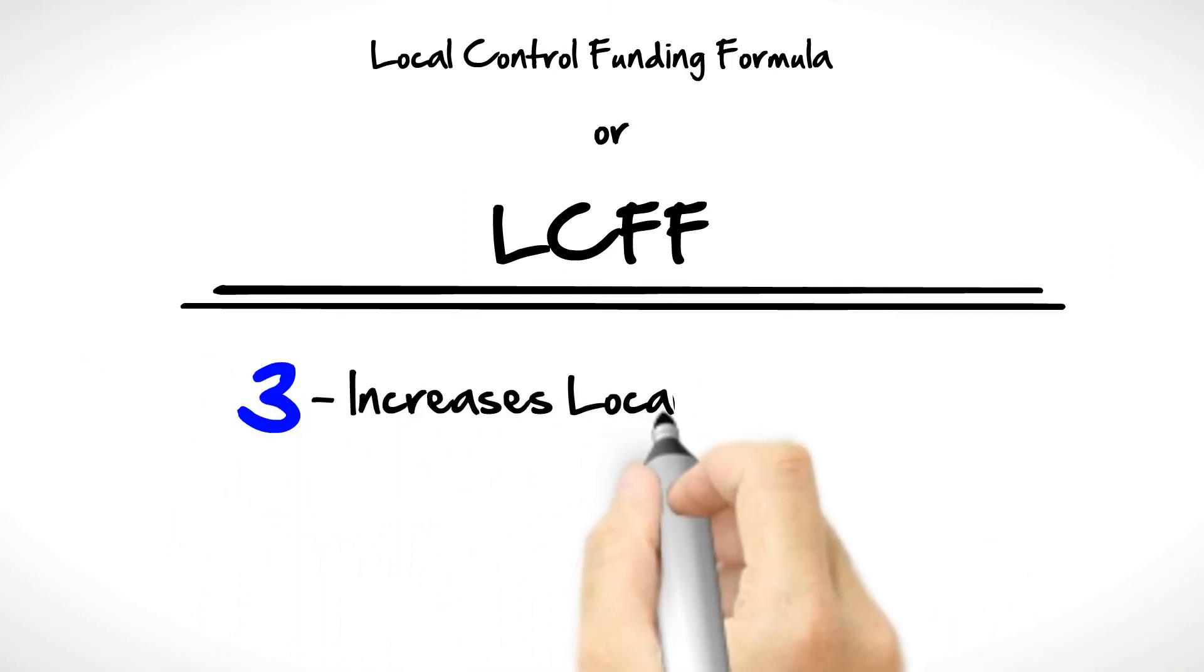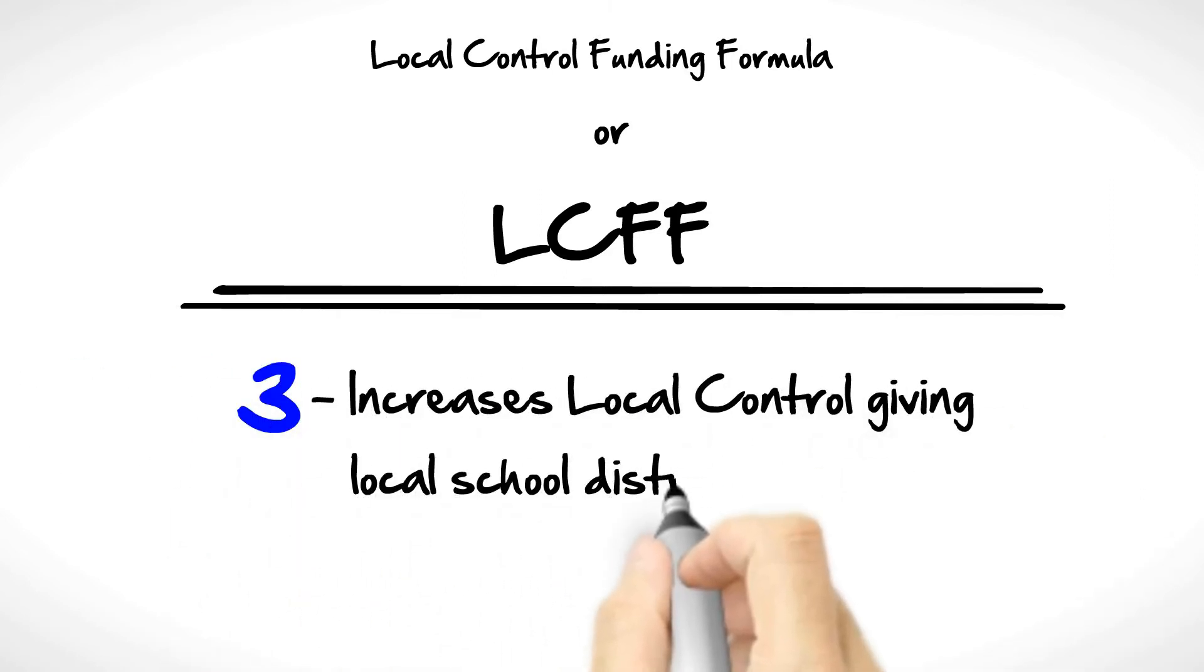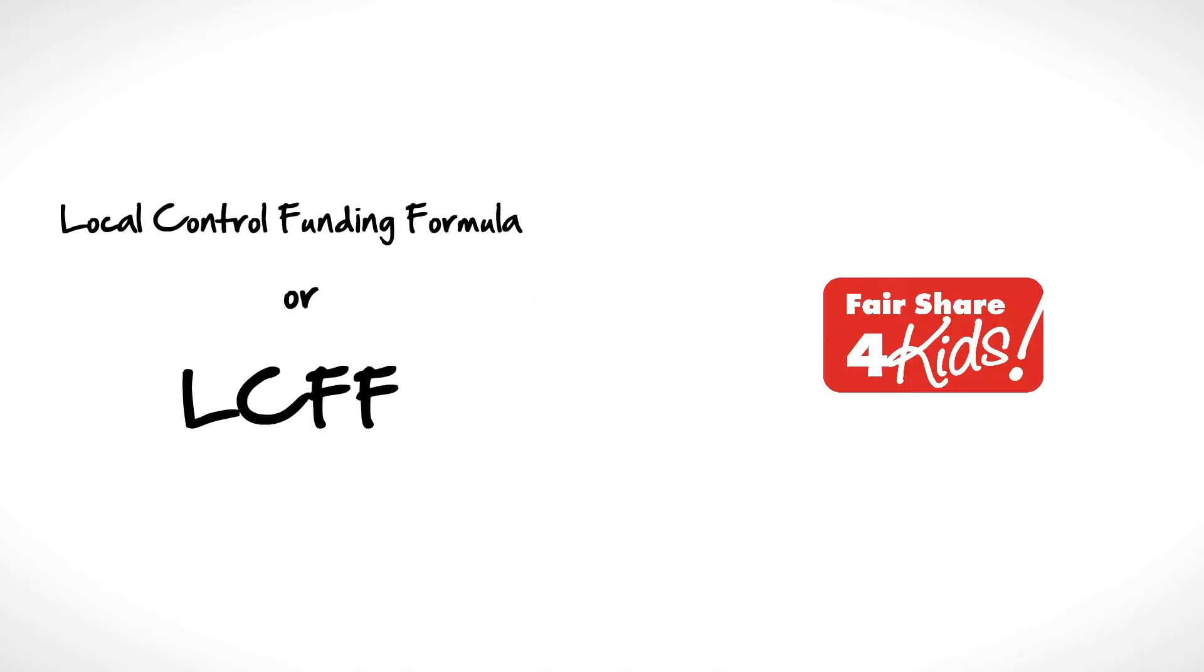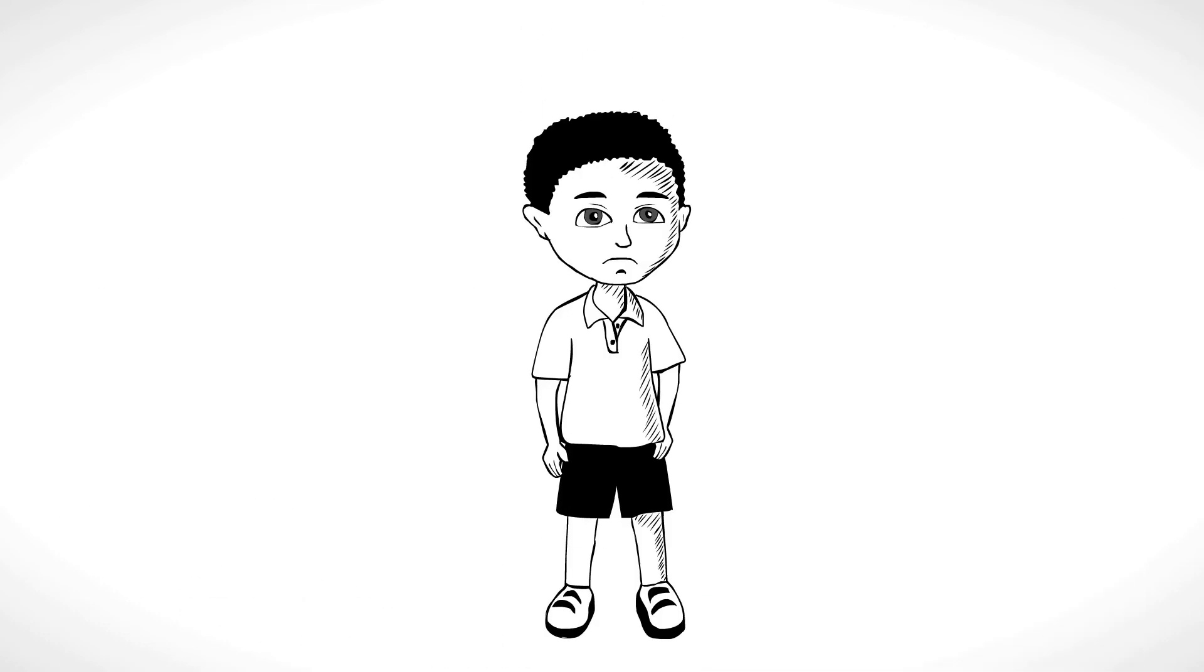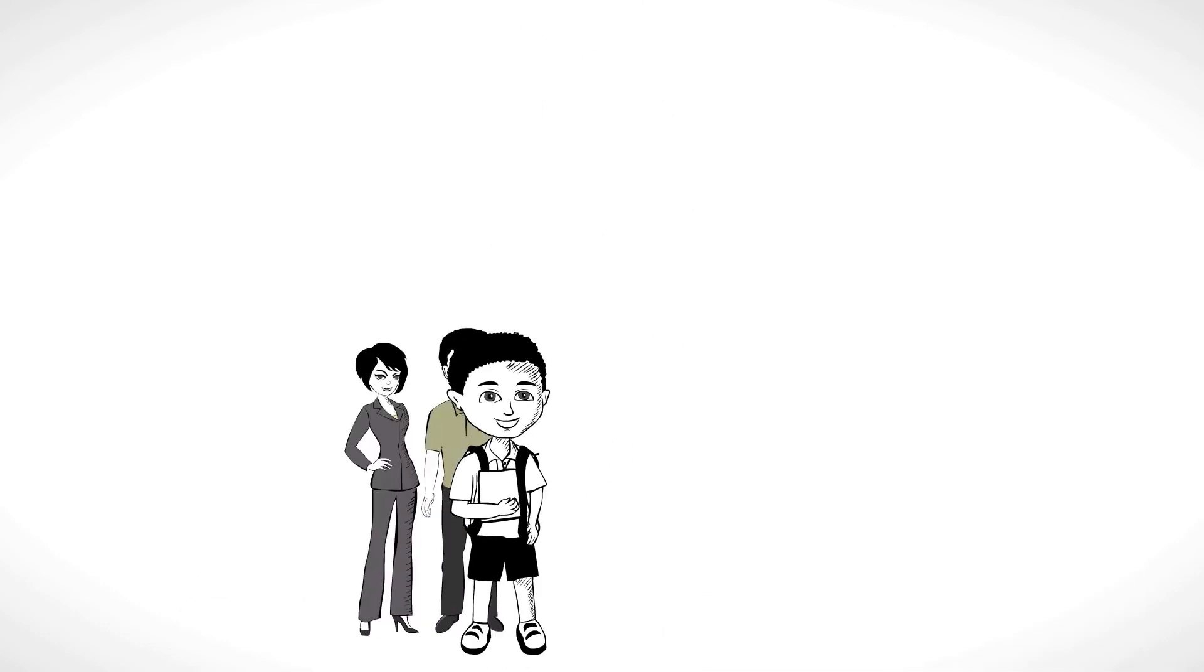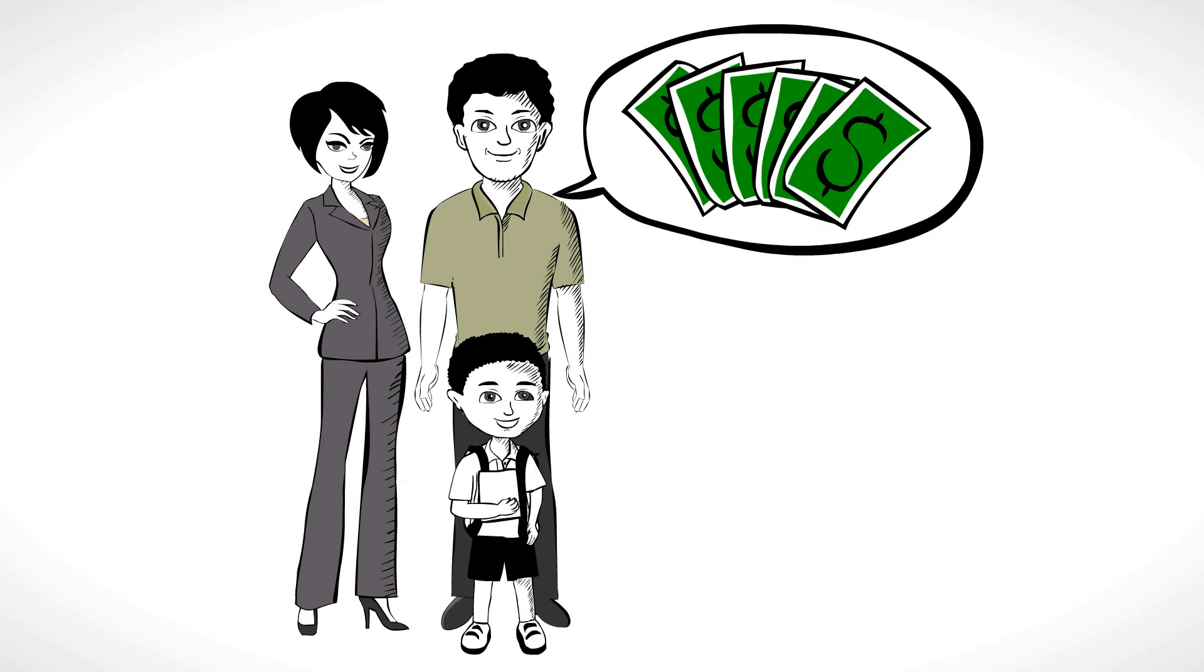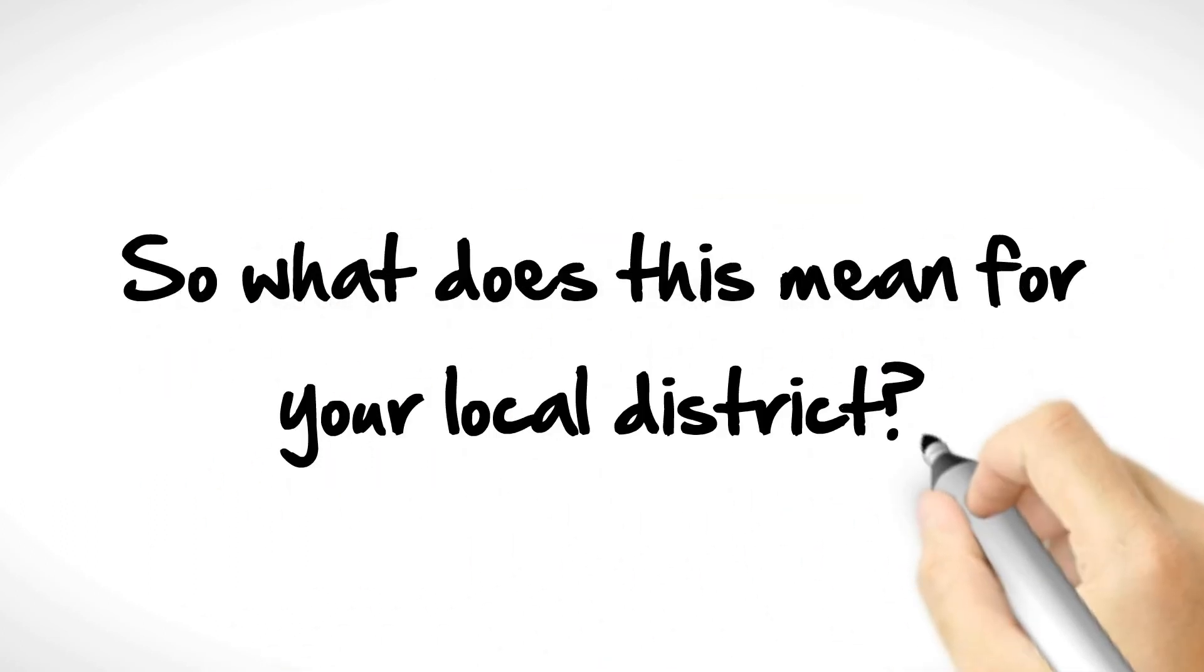Third, increases local control, giving local school districts more options on how to best use funds. Fair Share for Kids supports this plan so long as low-income students receive the support they need and parents have a voice on how monies are spent. So what does this mean for your local district?